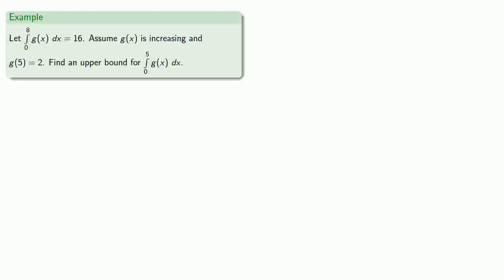For example, suppose I know that the definite integral from 0 to 8 is 16 and suppose we also know that g of x is increasing and g of 5 is equal to 2. Let's see if we can find an upper bound for the definite integral between 0 and 5.